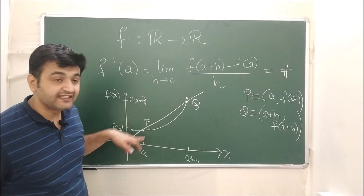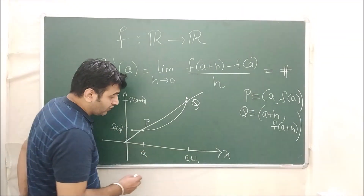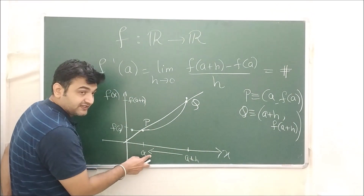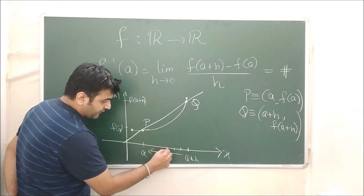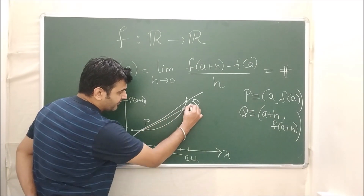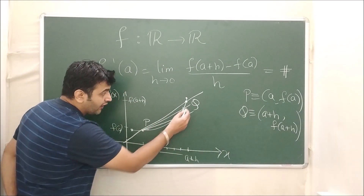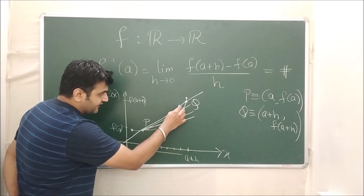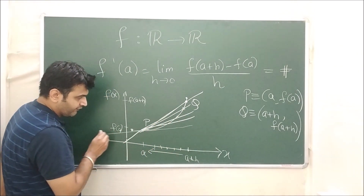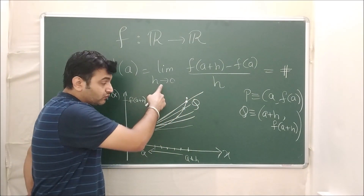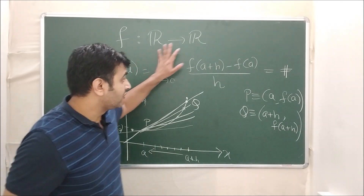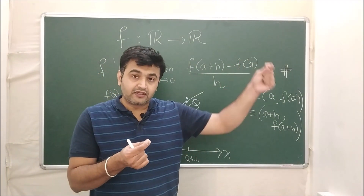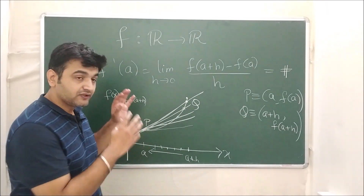As h goes to zero, a+h approaches a, so Q approaches P. The secant line becomes the tangent line. This limit forces the secant line to become the tangent line, and therefore the limit is nothing but the slope of the tangent line. That is how the derivative works for one variable.